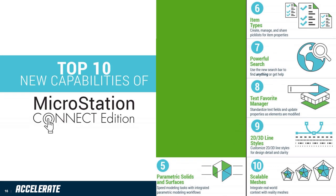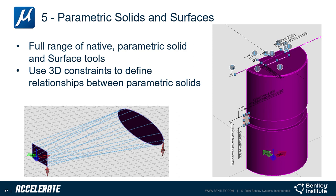Number five: parametric solids and surfaces. MicroStation Connect Edition offers native parametric modeling, fully integrated into its 2D and 3D modeling workflows. In MicroStation, parametrics extend into surfaces as well — something our competitors cannot say. While our competitors only allow parametrics based on a limited set of tools such as extrude, MicroStation goes further.